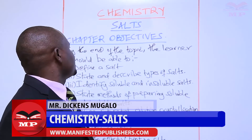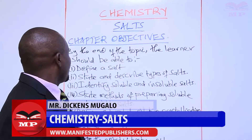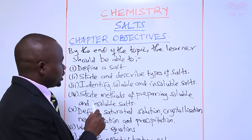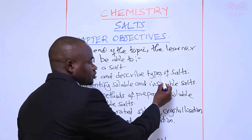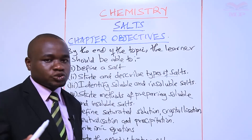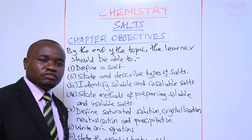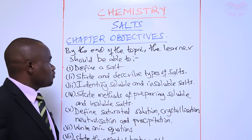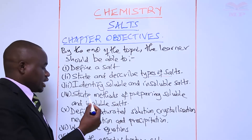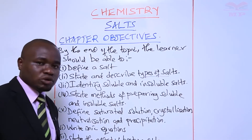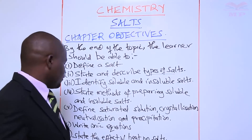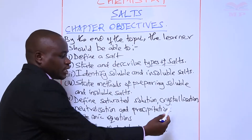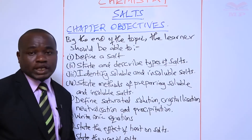Let's start by looking at the objectives. At the end of this topic you should be able to: number one, define a salt; number two, state and describe types of salts — we have around four types of salts; number three, identify both soluble and insoluble salts; number four, state methods of preparing both soluble and insoluble salts; and number five, define the terms saturated solution, crystallization.